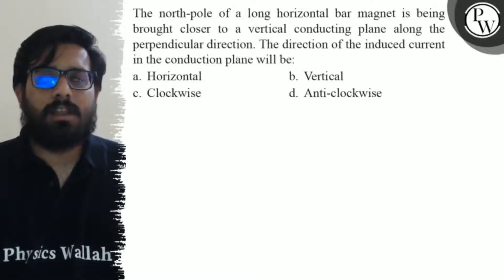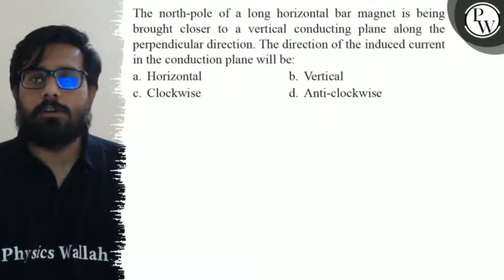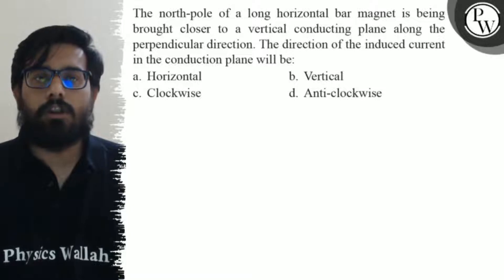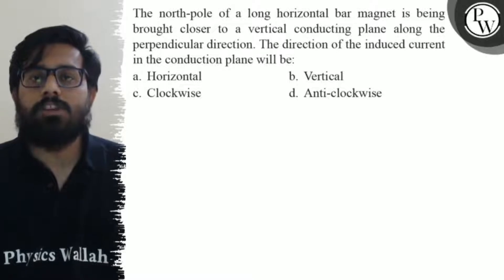Hello, vachos. Let us see the question. The north pole of a long horizontal bar magnet is being brought closer to a vertical conducting plane along the perpendicular direction. The direction of the induced current in the conduction plane will be: